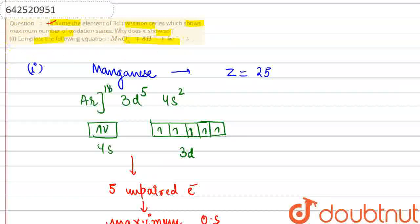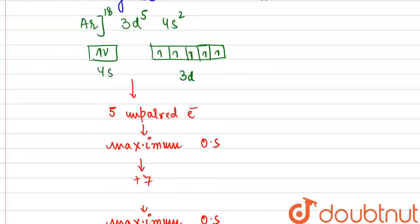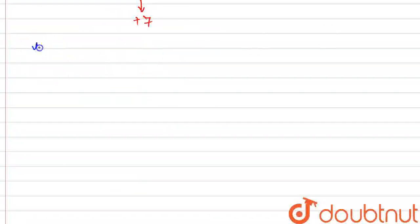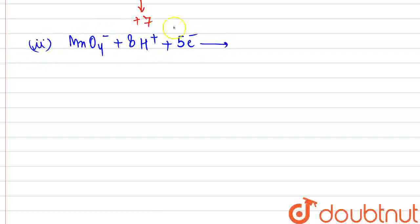The second is saying, complete the following equation. So, an ionic equation is given to us. For this, we are provided with MnO4 negative, 8 H plus ions plus 5 electrons. Manganese here is present in plus 7 oxidation state. It is gaining 5 electrons and getting reduced to manganese in plus 2 oxidation state with the elimination of 4 molecules of water. Thank you.